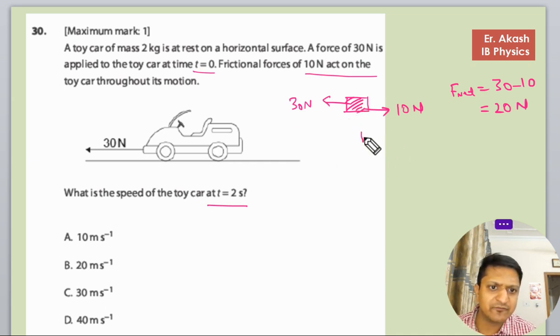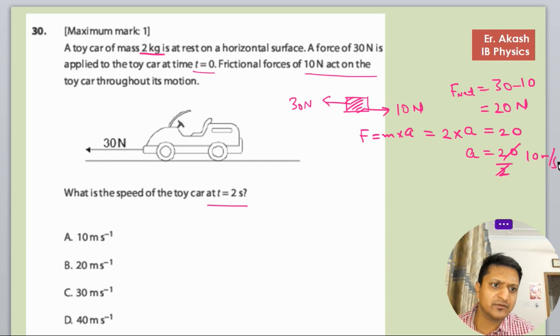So F equals to M into A and the mass is 2 kg. So 2 kg into acceleration and the force is 20. So acceleration is 20 by 2 and that's 10 meter per second square.